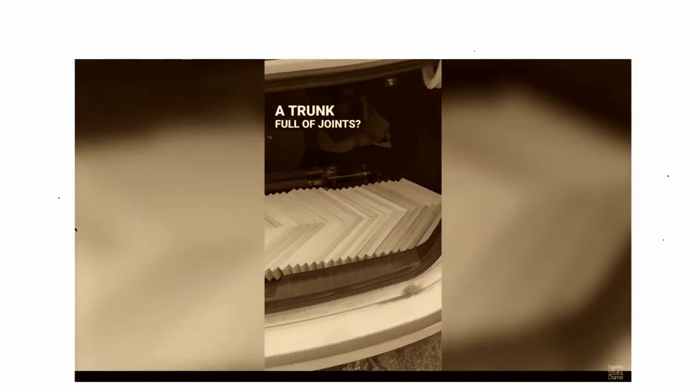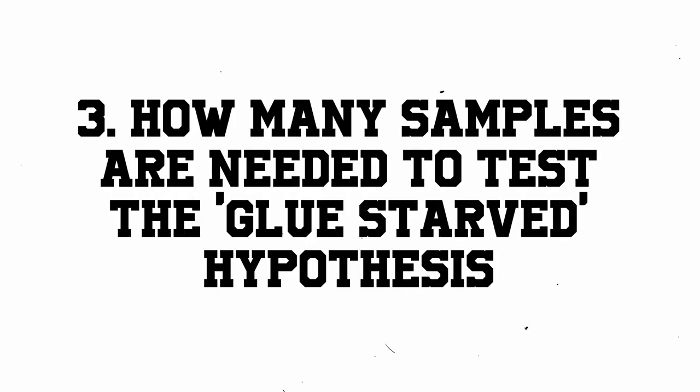I want to cover three points in this video. First, was excluding the maximum and minimum values from the average a bad idea or incorrect? Two, what can we test with this data? Since there are only five samples, can we come to any conclusions, or is five samples really not enough to know if any joint is stronger than another? Three, how many samples should be collected if a follow-up test was done to test a hypothesis Scott Walsh had — what he called the glue-starved hypothesis.